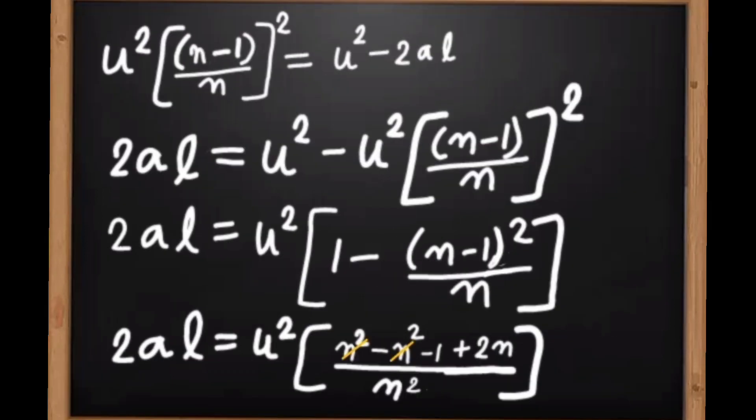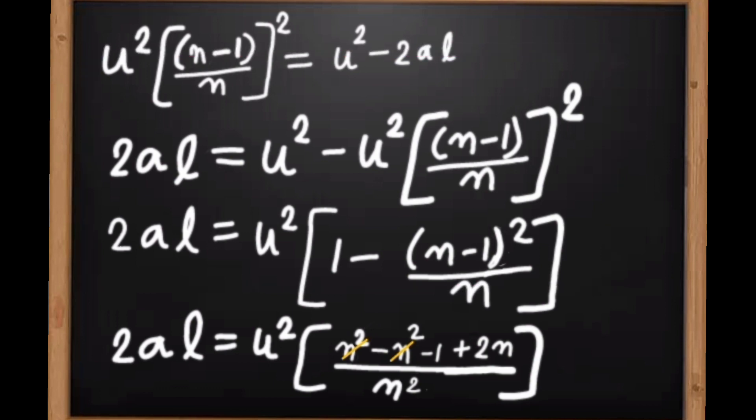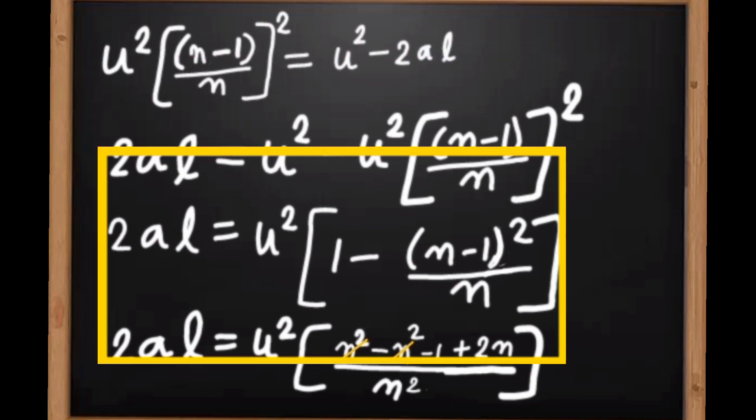Now let's simplify this to get u². We can write 2al = u² - u²(n-1)²/n². Taking u² common, we can write 2al = u²[1 - (n-1)²/n²].